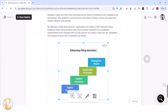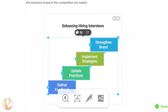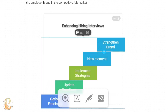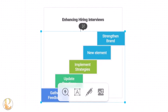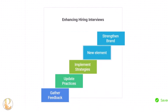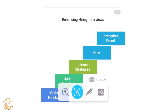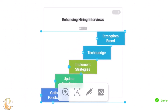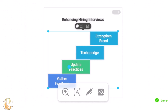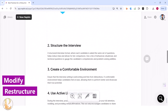Once you select an infographic and choose a color, you can add text elements using the plus sign — clicking it adds an extra text box at the top or bottom. You can double-click to rename any element. To remove an element, click the minus button and that box will be removed.